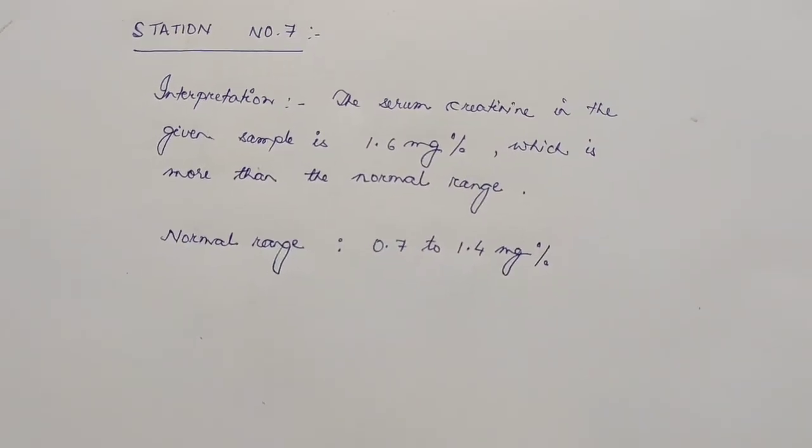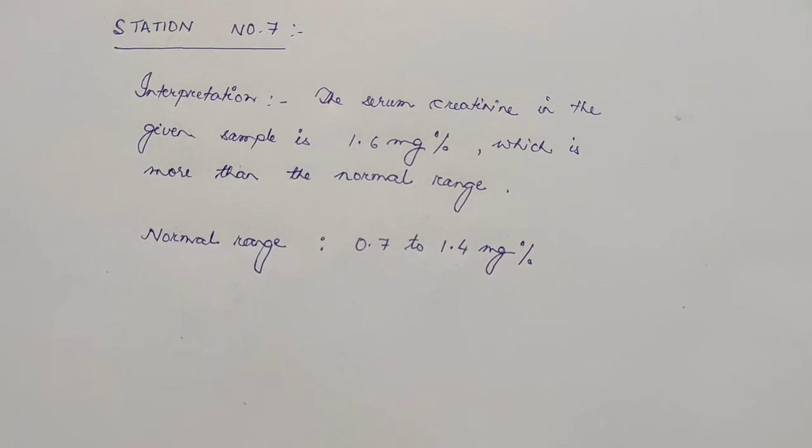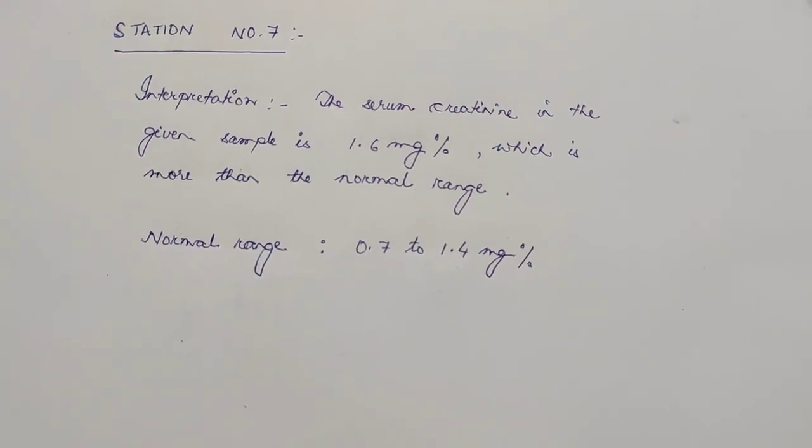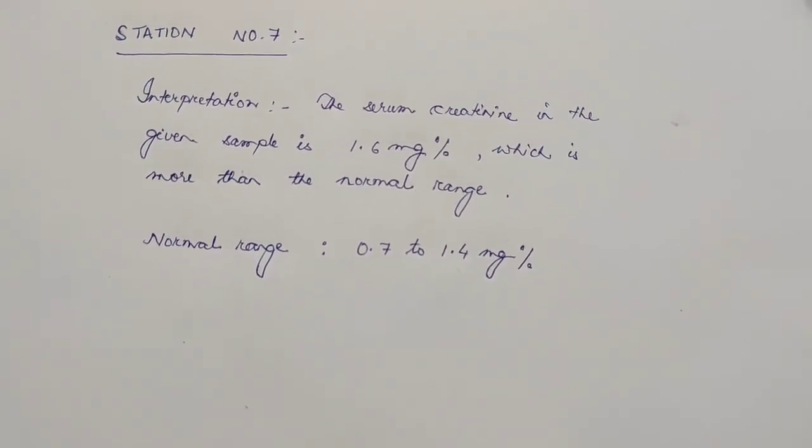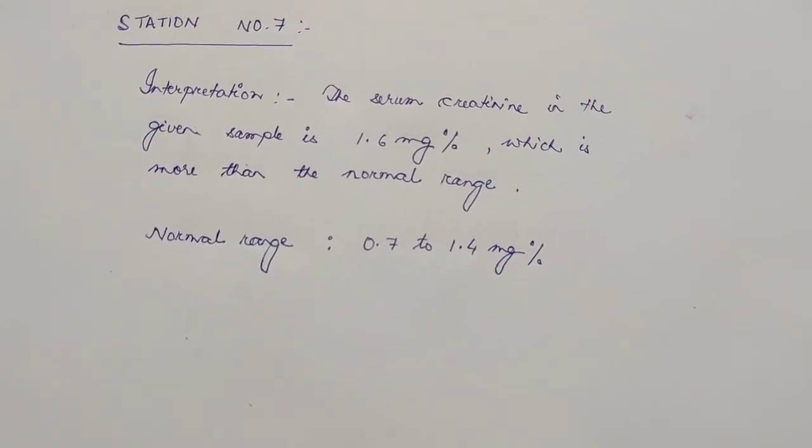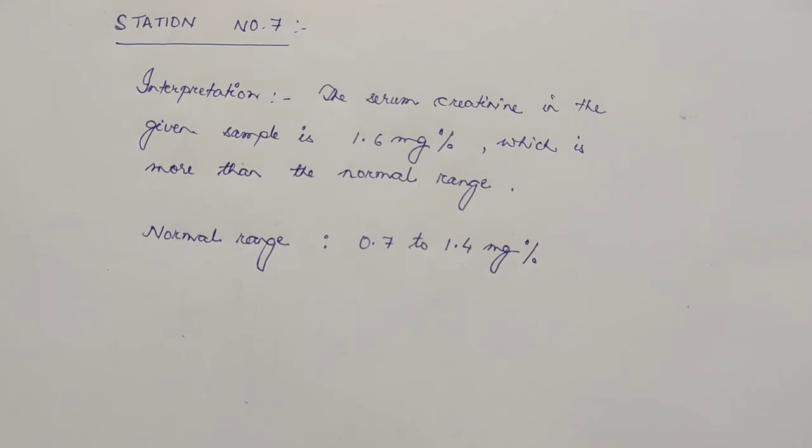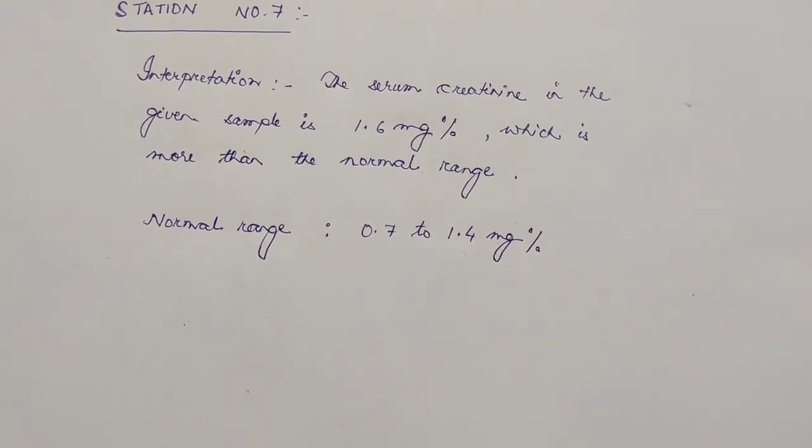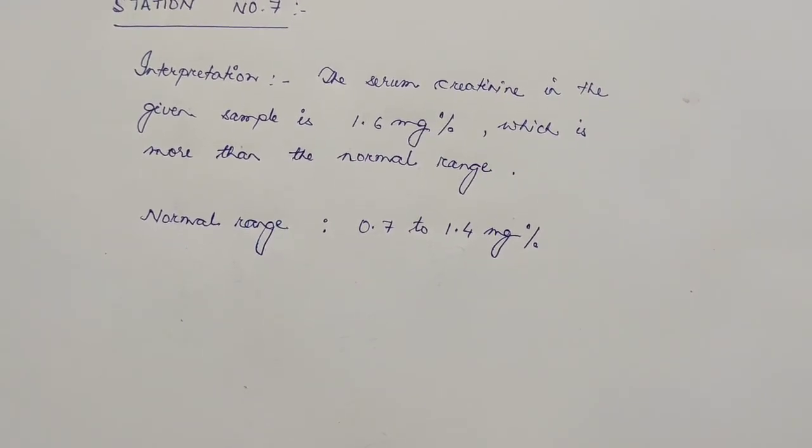So, now coming to the interpretation. The serum creatinine in the given sample is 1.6 mg%, which is more than the normal range. That is, it is increased. The normal range of serum creatinine is 0.7 to 1.4 mg%.